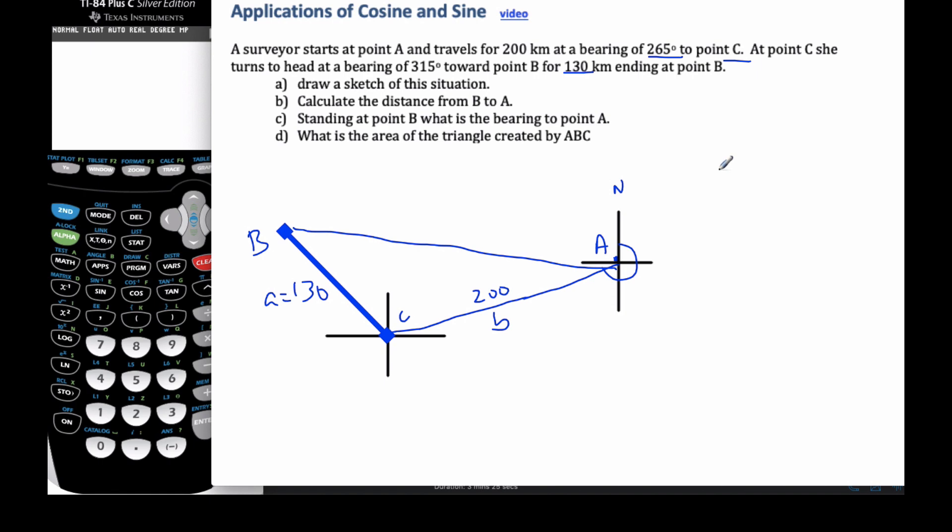And so I have angle A, angle B, and angle C. I have side a is 130. Side b is 200. Now, I do not know side c. That's what I'm looking for. I don't know any of the angles yet, either. But I was given all these bearings, so I think I'm going to have some success using the bearings to help me out.